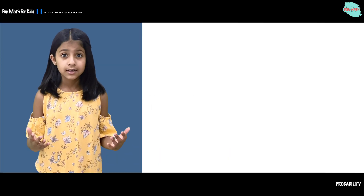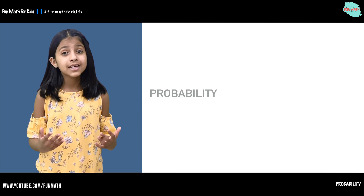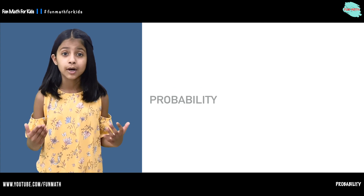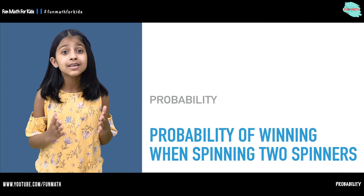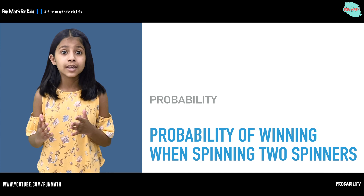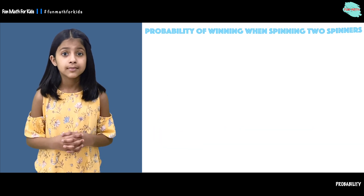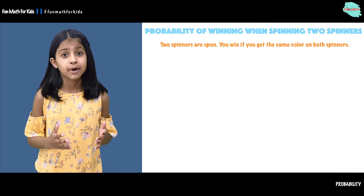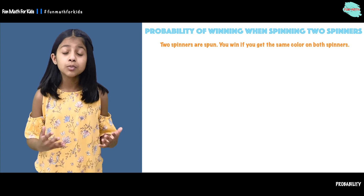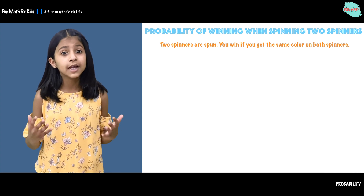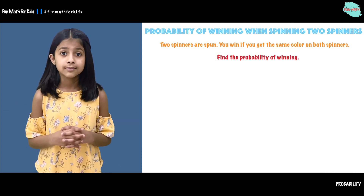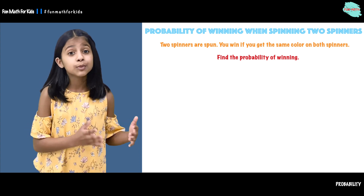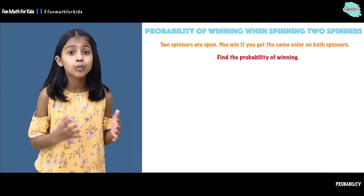Welcome to Funva. Today we will be continuing talking about probability. You will see the probability of winning when spinning two spinners. Two spinners are spun, and you win when you get the same color on both spinners. Let's find out the probability of winning.